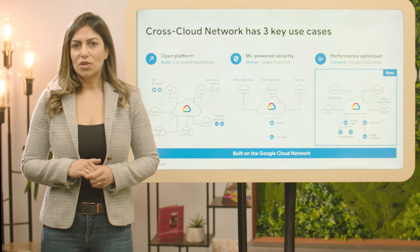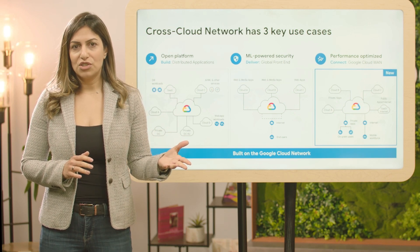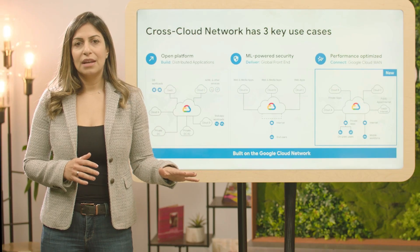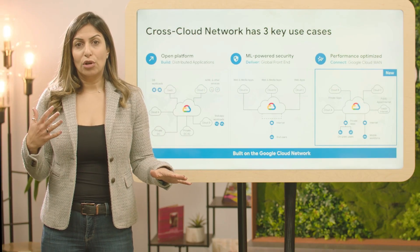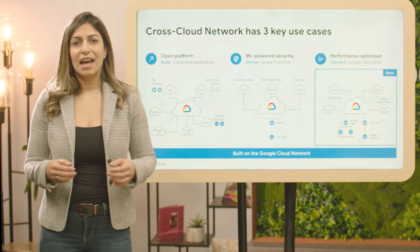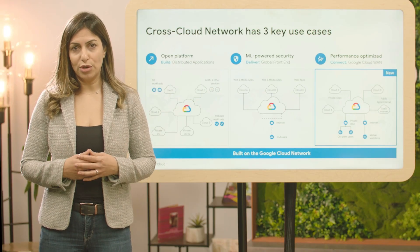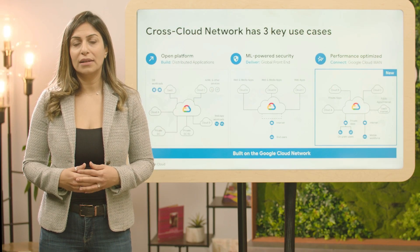Recently, Google introduced Cross Cloud Network, providing an open, secure, and performance-optimized network platform. Customers have been using Cross Cloud Network to enable their distributed applications across clouds seamlessly, deliver global front-end solutions for content delivery at scale, and connecting enterprises and clouds efficiently with the new solution, Google Cloud One.